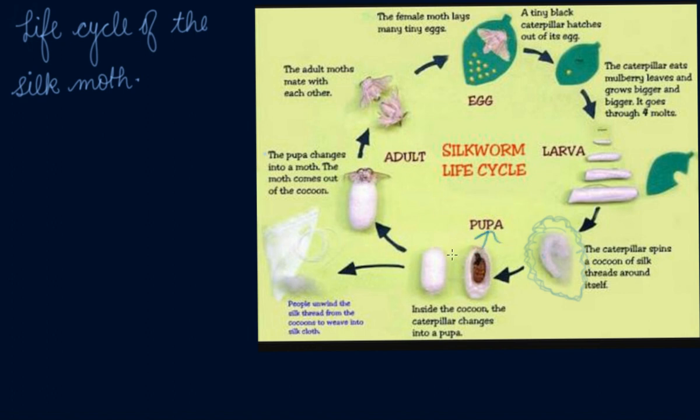The pupa grows and changes inside the cocoon. After a few weeks, this pupa is growing inside the cocoon, surrounded by the silk fiber. The pupa continues to grow and change inside the cocoon.